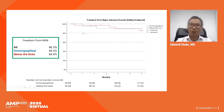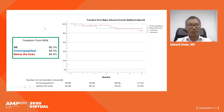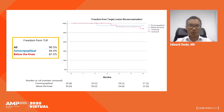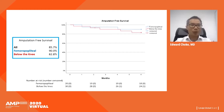Six-month freedom from major adverse events was approximately 86% for the entire group, 89% for femoral-popliteal, and 84% for below-the-knee. Six-month freedom from target lesion revascularization was 90% for the whole group, 94% for femoral-popliteal, and approximately 87% for below-the-knee. Six-month amputation-free survival was approximately 86% for the whole group, 90% for femoral-popliteal, and 82% for below-the-knee.